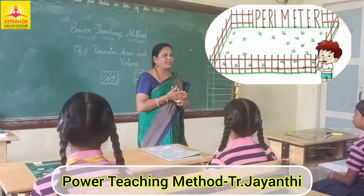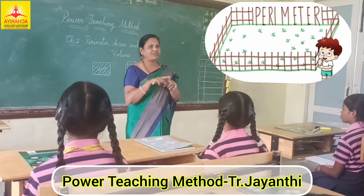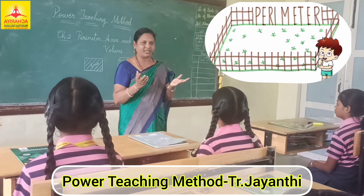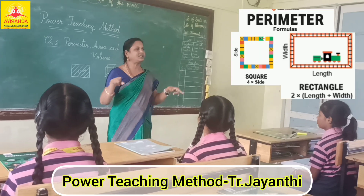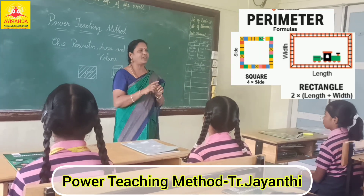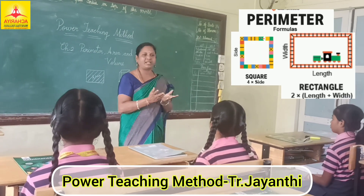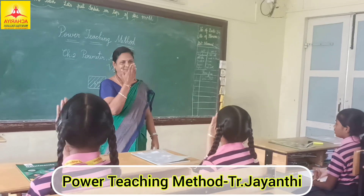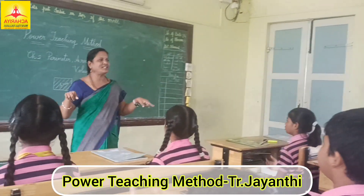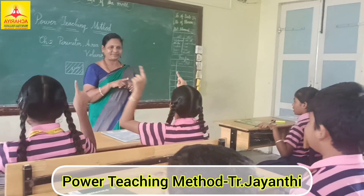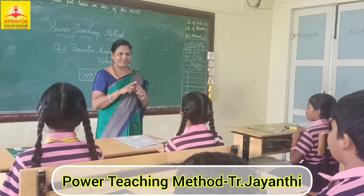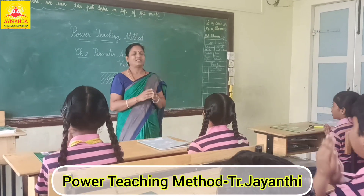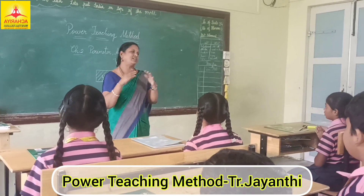Children, what is perimeter? The total length of the boundary of the closed figure is called perimeter. Understand? The total length of the boundary of the closed figure is called perimeter.